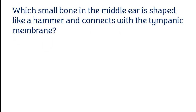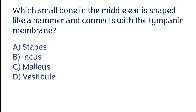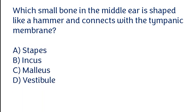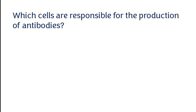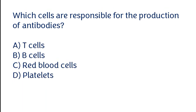Which small bone in the middle ear is shaped like a hammer and connects with the tympanic membrane? Stapes, incus, malleus, or vestibule. The correct answer is option C — the malleus is the small bone in the middle ear shaped like a hammer and connects with the tympanic membrane.